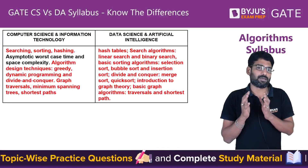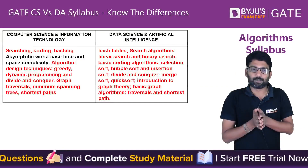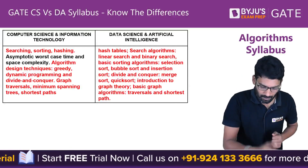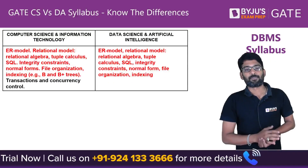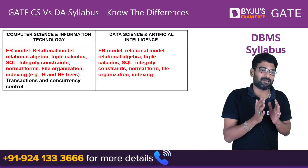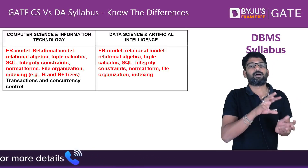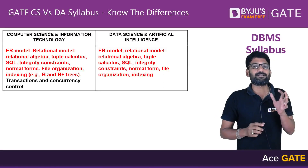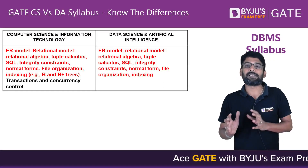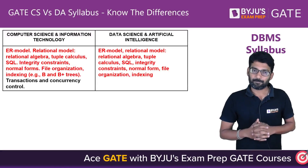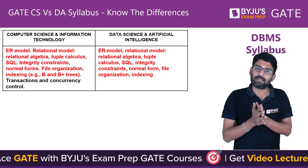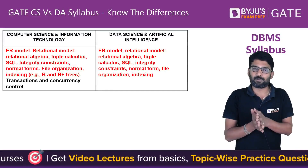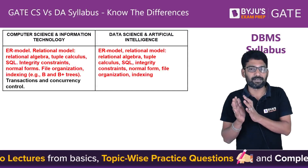DA does have graph algorithms, and also covers divide and conquer, greedy algorithms, and dynamic programming algorithms. For DBMS, all the topics from CS are present as-is in DA as well — ER model, relational model, relational algebra, SQL queries, integrity constraints, normal forms, file organization, and indexing are all common — except that transactions and concurrency control are not mentioned in DA but are present in CS.